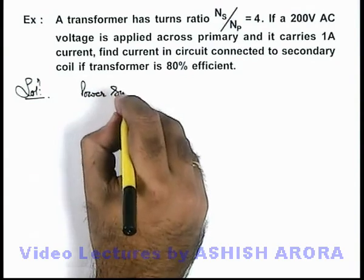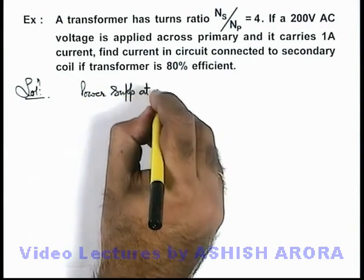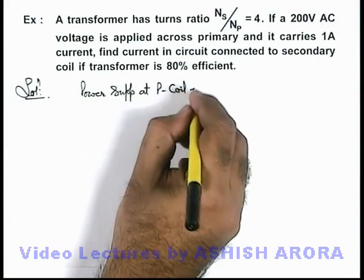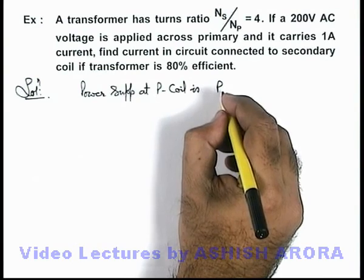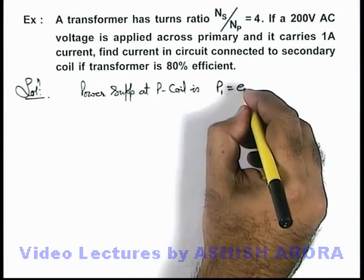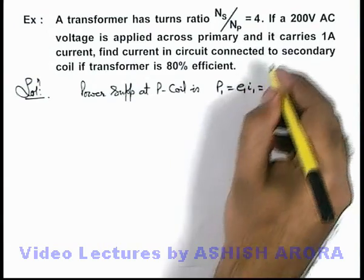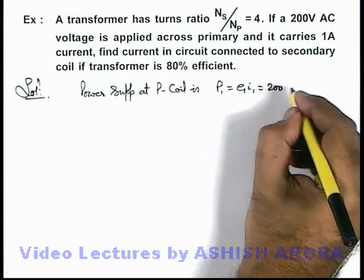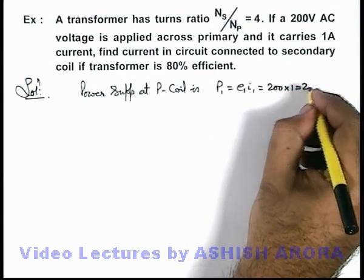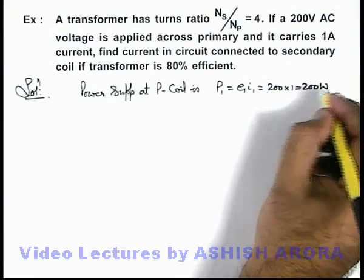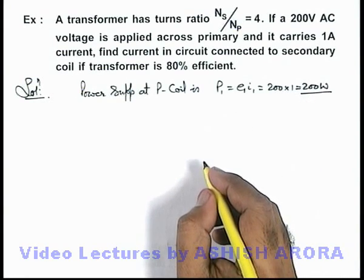The power supplied at the primary coil, P1, we can write as E1 × I1. The value of EMF at the primary coil is 200 and current here is 1, so the total power supplied to the primary coil by the external source is 200 watt.